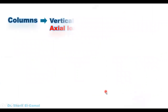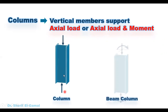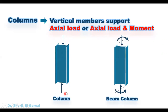The third structural element is the column. Columns are vertical members that support axial load, or they can support axial load and moment. When a column is supporting only axial load, it's called a column, and usually this load is a compression force. When the column is supporting axial load and moment, they are usually called a beam-column.